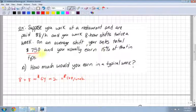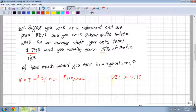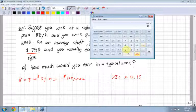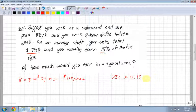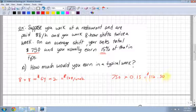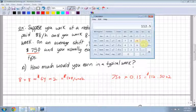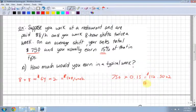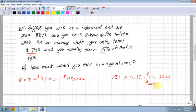Now, your sales total $750, and you usually earn about 15% of that in tips. I'm only going to multiply $750 by 0.15, not 1.15, because you're only earning 15% of the $750. $750 times 0.15 is $112.50 per shift. You do this twice a week, so times by 2—$225 per week.